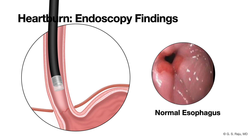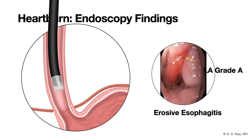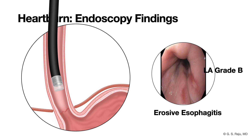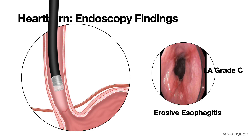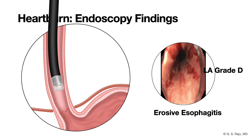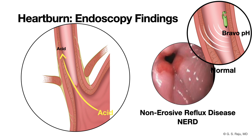Chronic acid exposure can cause actual visible damage — erosive esophagitis — and there's a grading system for that, the LA system, the Los Angeles classification. It goes from A, mildest, to D, most severe. Grade A: one or more small breaks, erosions, less than 5 millimeters long. Grade B: at least one longitudinal break is 5 millimeters or longer. Grade C: erosions connect across folds but not all the way around — not circumferential. Grade D: the worst — damage is pretty much completely circumferential. Some patients have terrible heartburn but the scope looks normal — that's called non-erosive reflux disease, NERD. The symptoms are real, but there are no visible erosions.